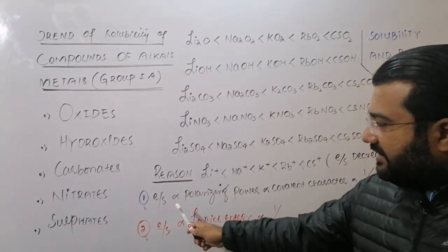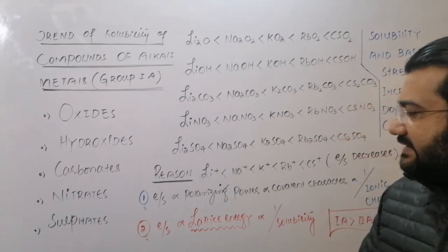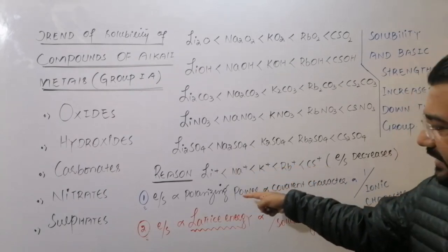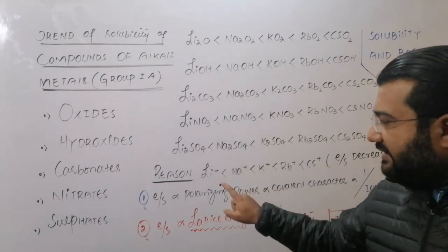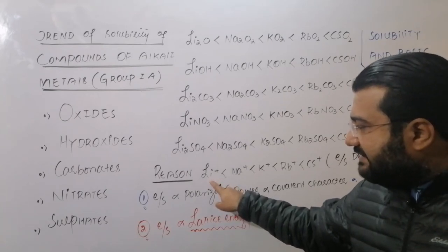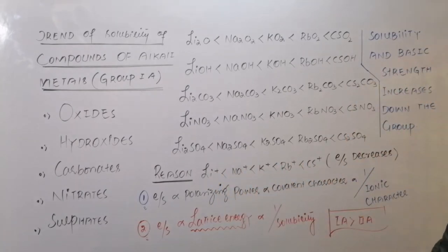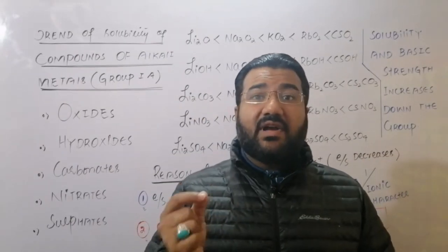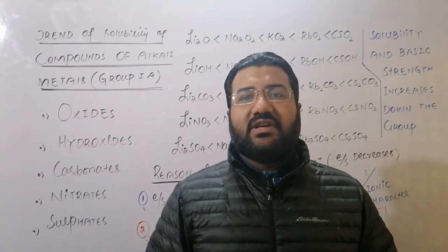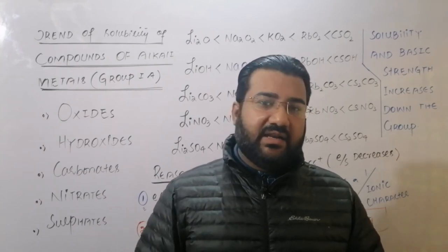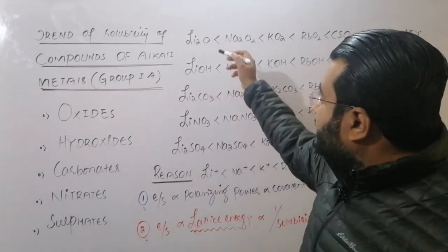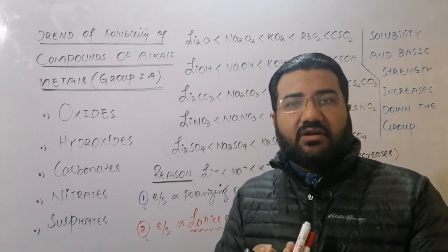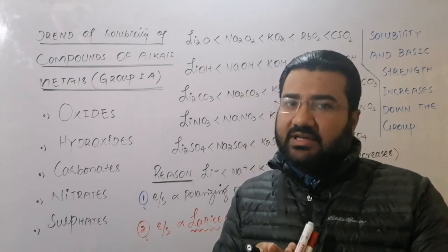Charge density is directly proportional to polarizing power. Because charge density decreases going down the group, polarizing power also decreases. The lithium ion has maximum polarizing power while the cesium ion has minimum polarizing power. Because of the maximum polarizing power of lithium ions, compounds of lithium — lithium oxide, hydroxide, carbonate, nitrate, and sulfate — are predominantly covalent in nature.